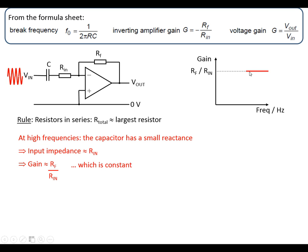So we can put this on a graph. At high frequencies, we've got a constant gain of RF over Rin.